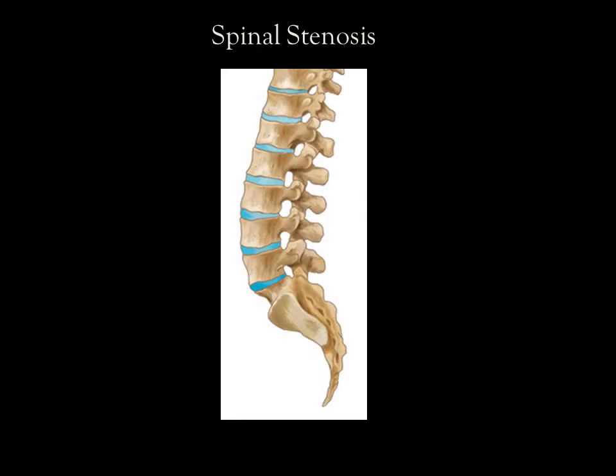Spinal stenosis is the narrowing of the space surrounding the spinal cord, or the narrowing of the opening to where the spinal nerves exit to supply the body, called the intervertebral foramen, which are marked by the black ovals. Degenerative arthritis, disc herniations, and overgrowth of the ligamentous structures are all common causes of spinal stenosis.